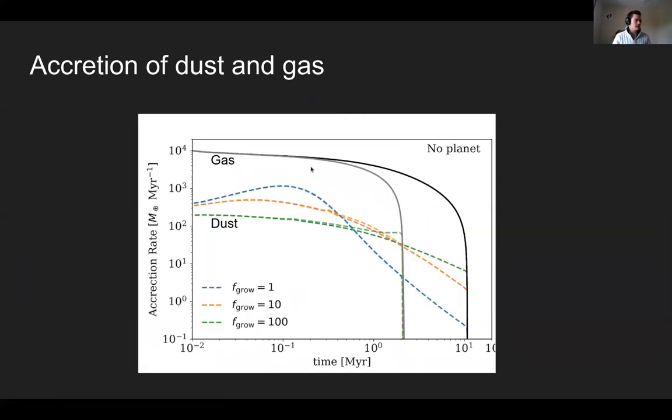So what I'm showing here quickly is the accretion rate as a function of time, with the gas in models with two different photoevaporation rates. Essentially, the accretion rate goes down over time until it's eventually shut off by photoevaporation. The dust behaves a little bit differently. The growth of dust leads to initially increasing accretion rate. And then as the dust to gas ratio drops in the models, the accretion rate of dust decreases.